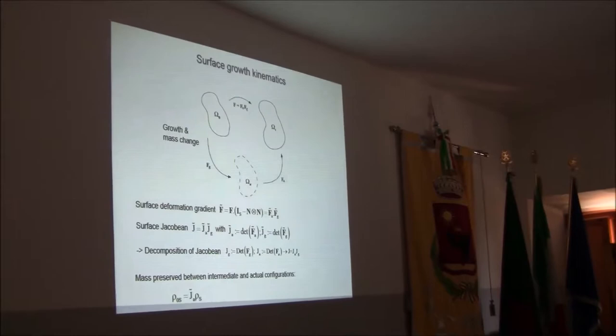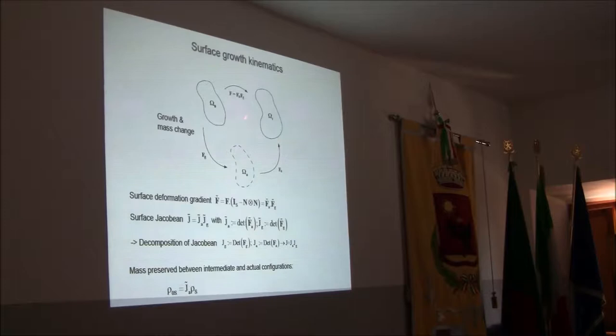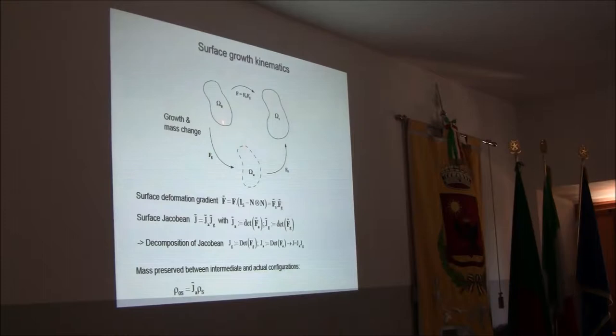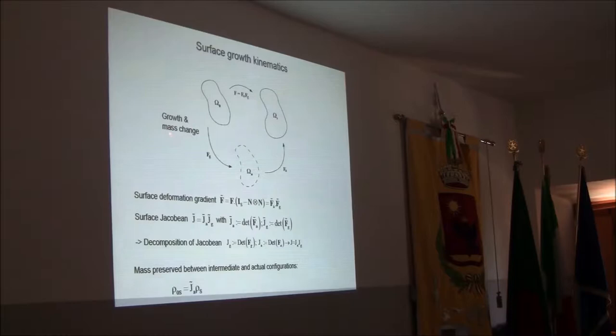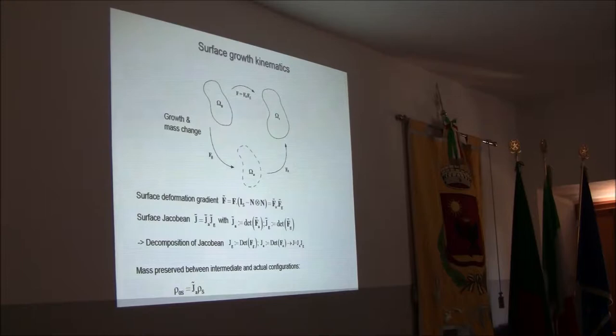The surface growth kinematics follows a picture given in a paper by Rodriguez and co-workers in 1994, which parallels the Lee decomposition in finite strain plasticity. The total deformation gradient F is a product of a growth mapping F_G, responsible for the growth process and mass change. Since this intermediate configuration is not, in general, kinematically compatible, there is a need to introduce an additional elastic mapping to restore overall kinematic compatibility. This is known for volumetric growth, and we extend it here for surface growth.